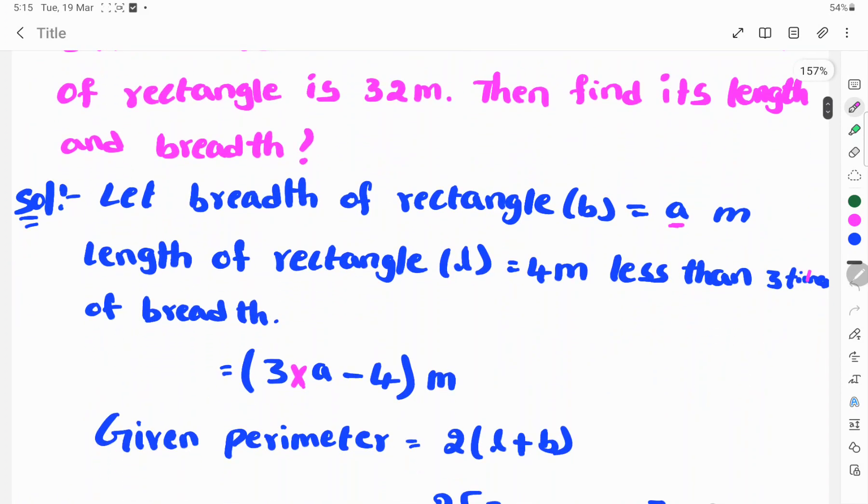So here, 3 times means 3 into breadth. Breadth is A, so 3 into A. Less than means minus, so 3A minus 4 meters.